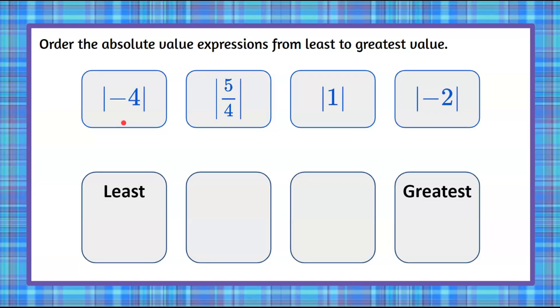We designate that or represent that in math using absolute value symbols, which are these parallel lines. So let's evaluate each one so that we can correctly order them. The absolute value of negative four is four. The absolute value of five fourths is five fourths. And for comparison's sake, we're going to rewrite this improper fraction to a mixed number. So four goes into five once with one left over. So one and one fourth is the mixed number that represents five fourths. The absolute value of one is one. The absolute value of negative two is two.